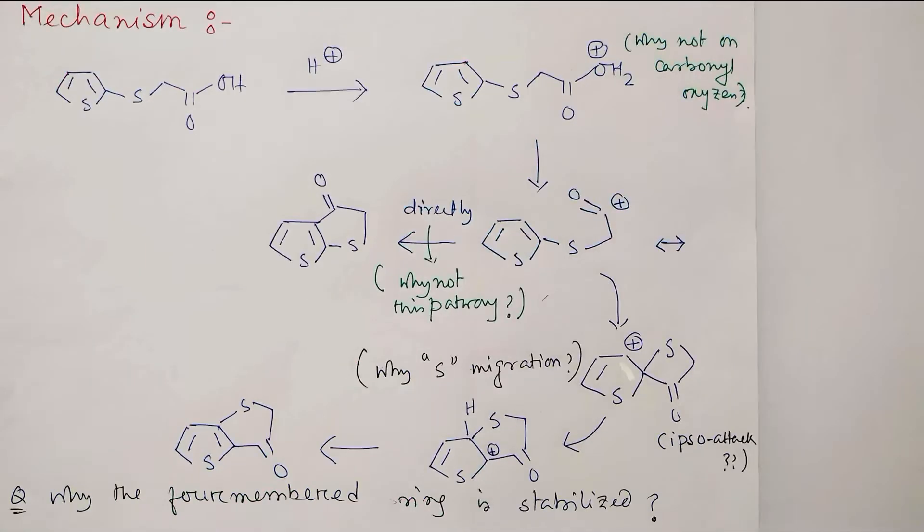So let's discuss the mechanism. First of all, this OH will be protonated. You may think that there is a carbonyl oxygen of the carboxylic group which is more electron rich - why are you showing that the hydroxyl part gets protonated?